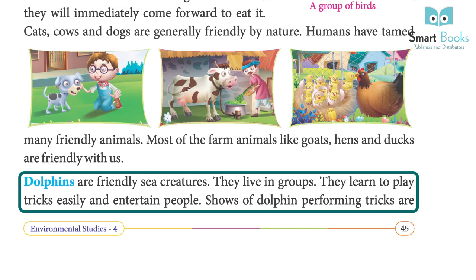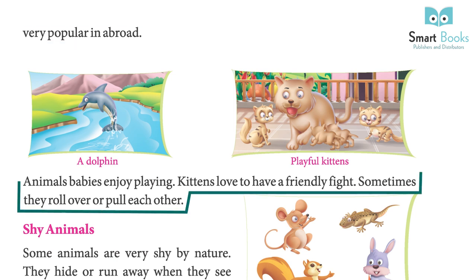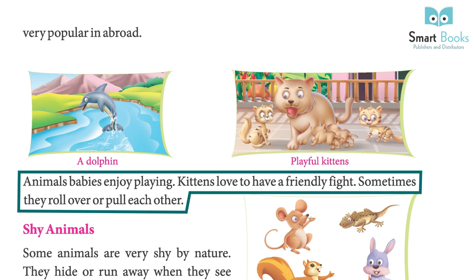Dolphins are friendly sea creatures. They live in groups, learn to play tricks easily, and entertain people. Shows of dolphins performing tricks are very popular. Animal babies also enjoy playing — kittens love to have a friendly fight; sometimes they roll over or pull each other.